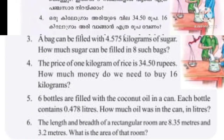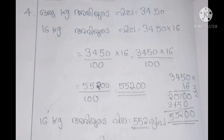The price of 1 kg of rice is 34.50 rupees. How much money does Louie need to buy 16 kilograms? 1 kg costs 34.50 rupees. We need to find the cost of 16 kg — that is 34.50 multiplied by 16.